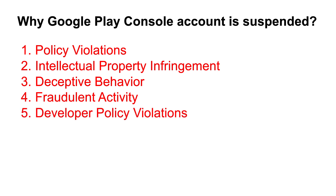Number five is developer policy violations — specifically repeated violations: consistent failure to adhere to the Google Play Developer Program Policy after receiving warnings or suspensions. For example, if you submit an app and it gets rejected due to a policy violation, then you submit it again and it gets rejected again, submitting repeatedly means you are making repeated violations.